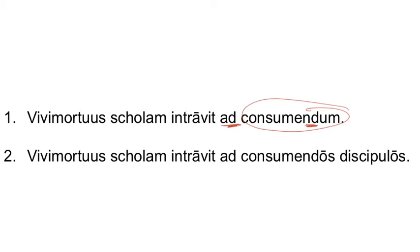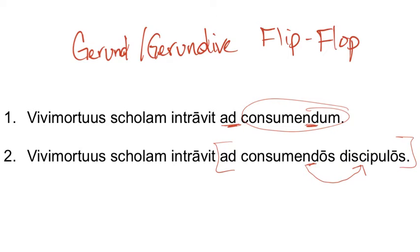Let's look at our second sentence: Vivi Mortui scholam intrat ad consummendos discipulos. We have some more details here. He doesn't just come into the school to eat, but he comes for the specific purpose of eating the students. So here, consummendos is a gerundive because it has an antecedent, discipulos. So ad is a preposition taking discipulos as its object, and discipulos is being modified by the gerundive. What we have here is called the gerund-gerundive flip-flop.